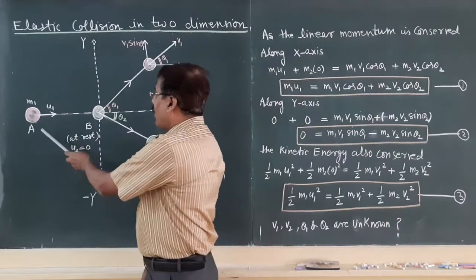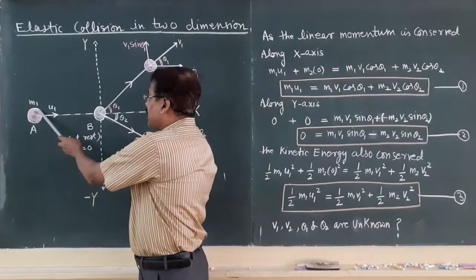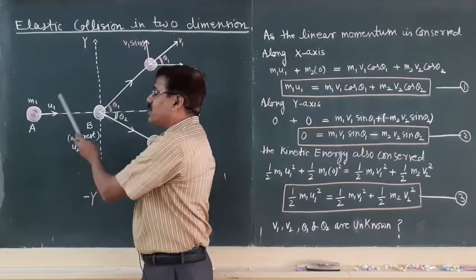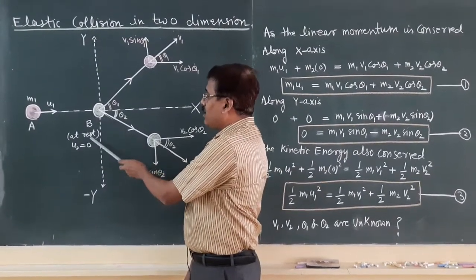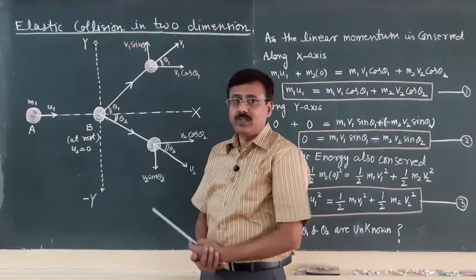In the diagram you will find object A of mass m1 moving with velocity u1, object B is having mass m2 but it is in the rest position.